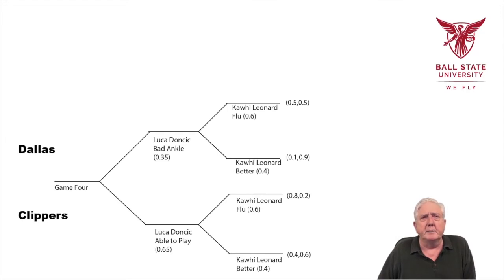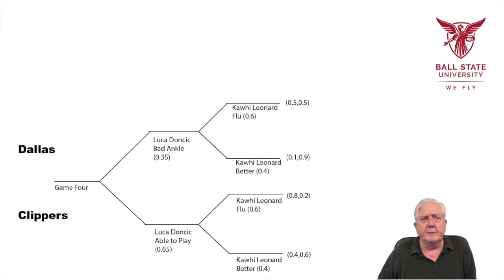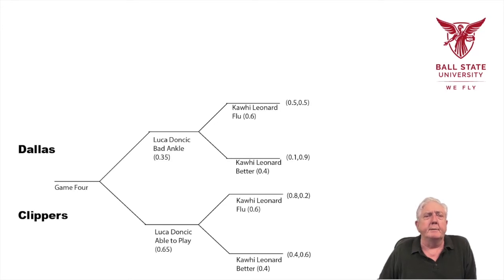How do we determine the probabilities for Dallas winning and losing? If Kawhi Leonard has the flu and Luka Doncic has a bad ankle, the probability of each team winning is 0.5 for Dallas and 0.5 for the Clippers — about 50-50. If Luka's bad ankle is still there and Kawhi Leonard is better, it's 0.1 for Dallas and 0.9 for the Clippers. If Kawhi has the flu and Luka is able to play, that's about 80-20 that Dallas will win. And if both Luka and Kawhi are able to play, it's about 40-60 with 60% more likely the Clippers will win.